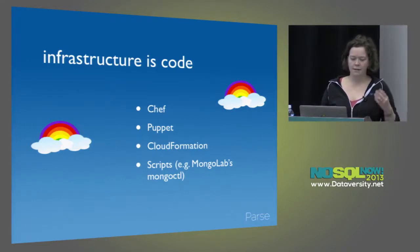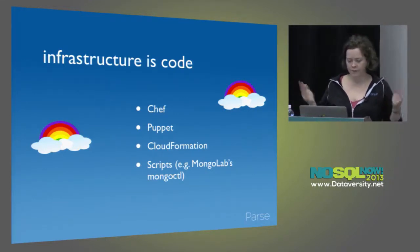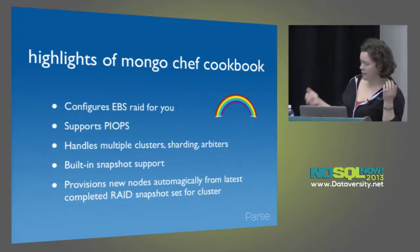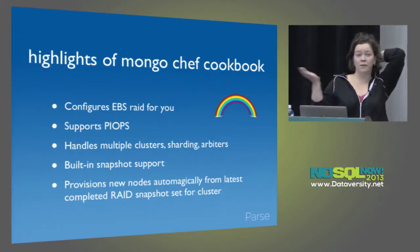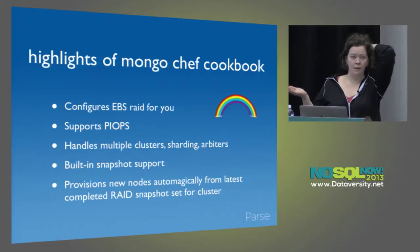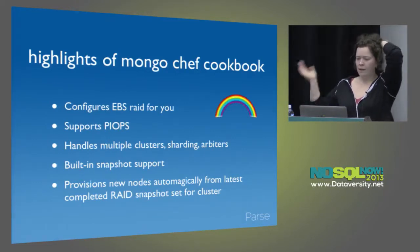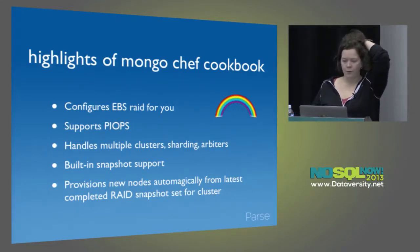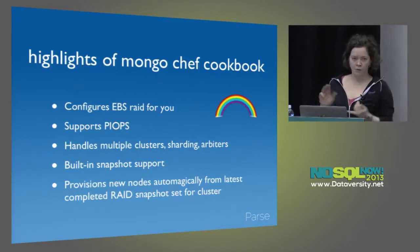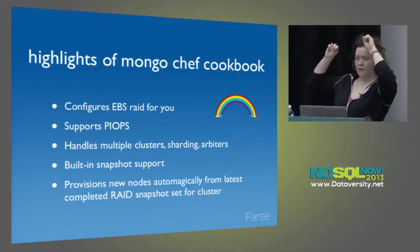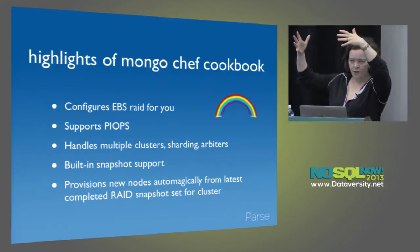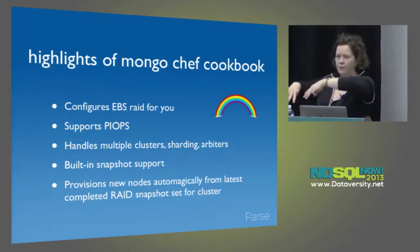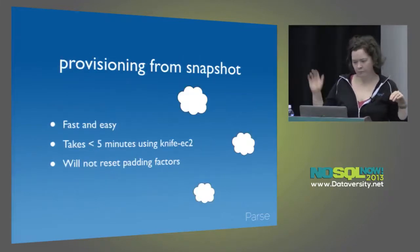The best homegrown tool in that category is MongoLab's MongoCtl — it lets you configure a cluster, do restarts and rolling upgrades. The Chef Community Cookbook will assemble and provision EBS RAID for you, configure PIOPS, and handle multiple clusters. There are recipes that will do the backups for you — it'll perform a simultaneous snapshot on, say, three RAID'd EBS volumes, tag them, and when you next provision a node for that cluster, it'll restore from those snapshots automatically.